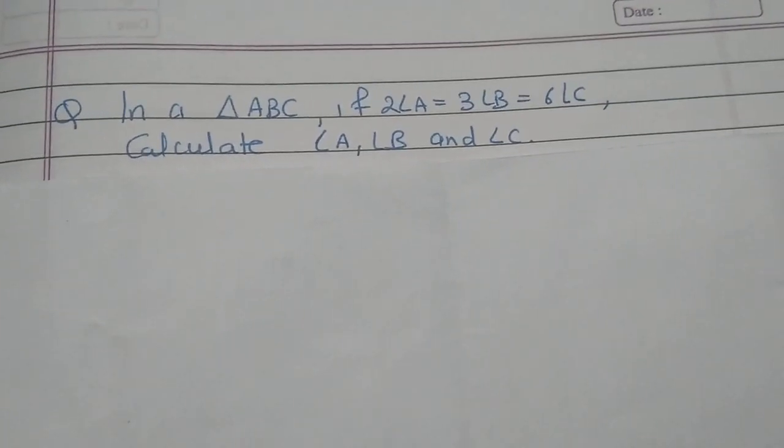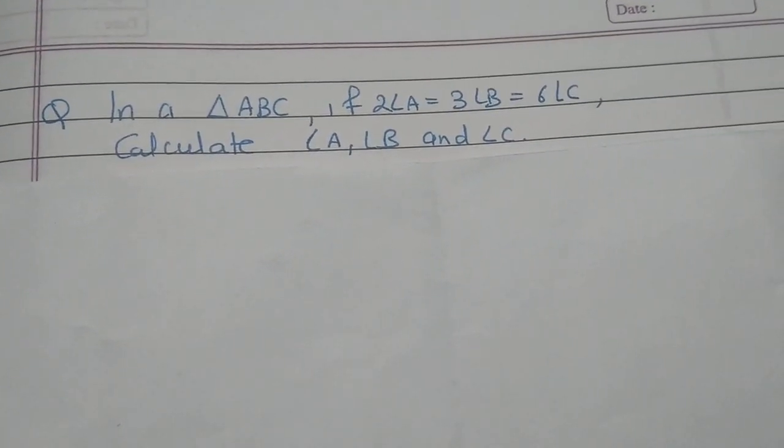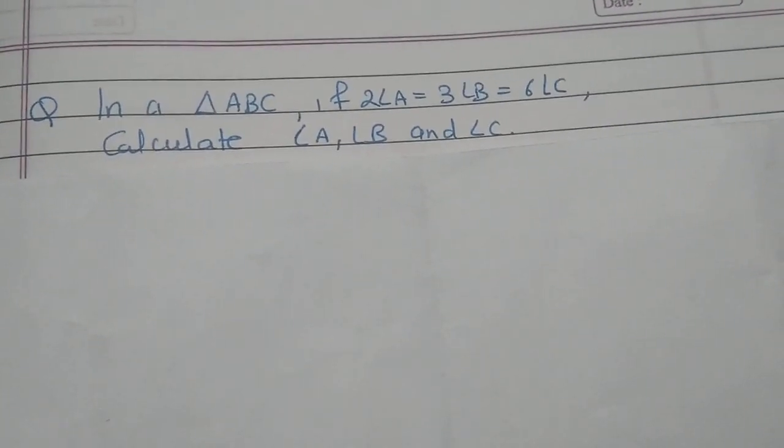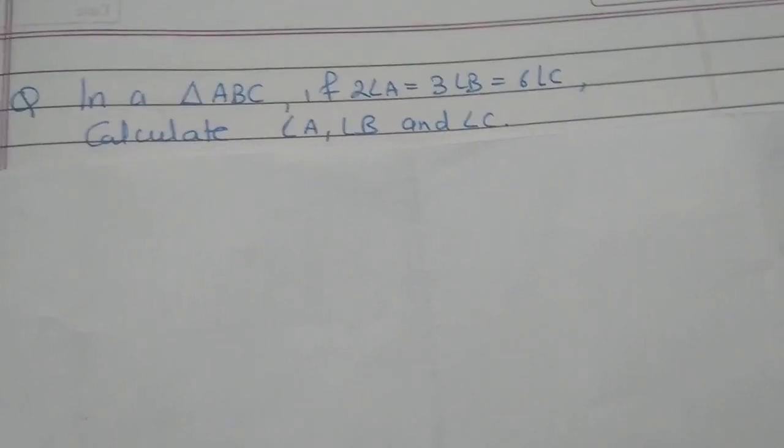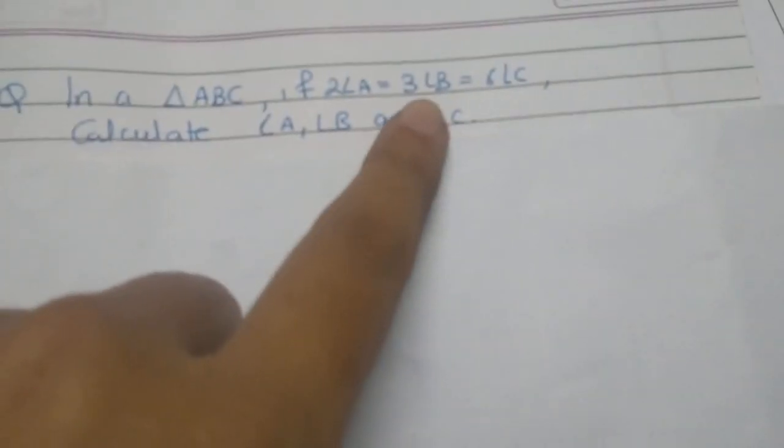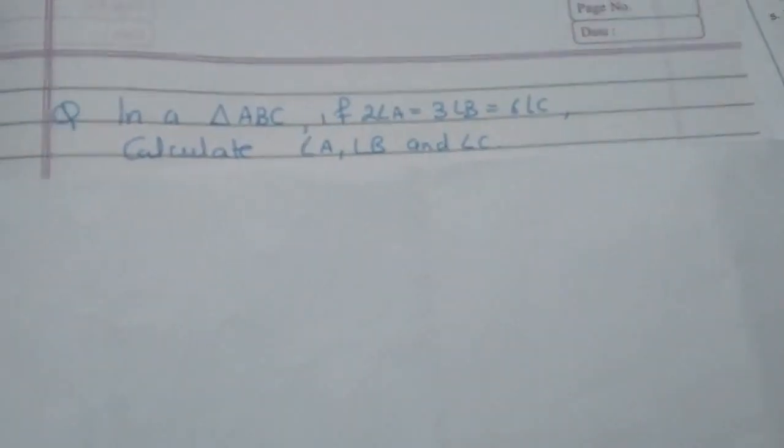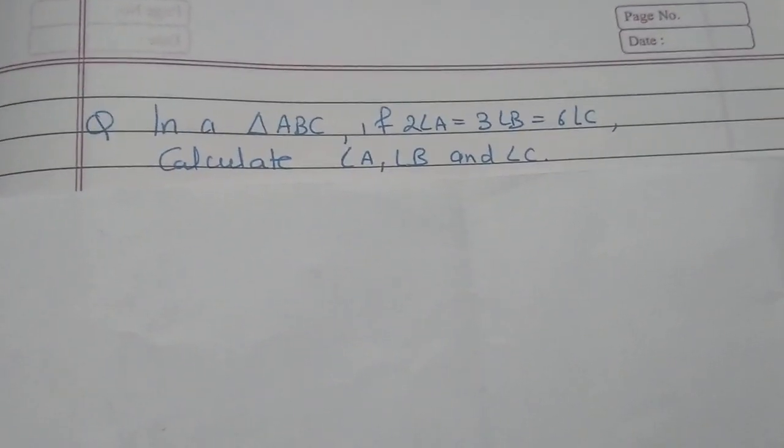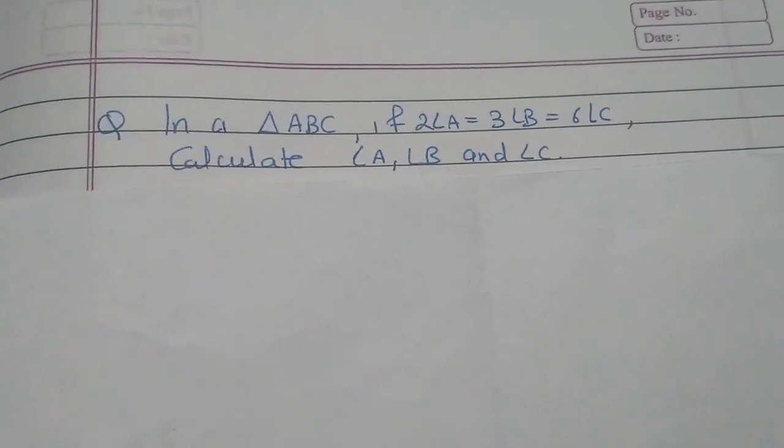In this question, it is given that in a triangle ABC, if 2 times angle A is equal to 3 times angle B is equal to 6 times angle C, then we have to find angle A, angle B and angle C.